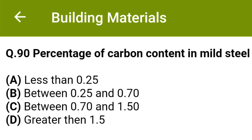Percentage of carbon content in mild steel: option A, less than 0.25; option B, between 0.25 and 0.70; option C, between 0.70 and 1.50; option D, greater than 1.5. The correct answer is option A, less than 0.25.